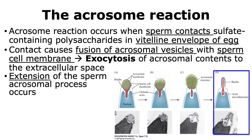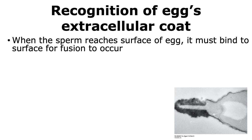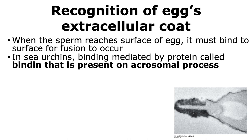Once this release occurs, there is an extension of the sperm acrosomal process. The enzymes that are released can digest a path through the jelly coat to the egg cell surface. After the acrosomal reaction, the next step is the recognition of the egg's extracellular coat. When the sperm reaches the surface of the egg after penetrating through the vitilin envelope, it must bind to the surface of the egg for fusion to occur. In sea urchins, this binding is mediated by a protein present on the sperm called bindin, normally present on the acrosomal process as shown in the figure, indicated by dark coloration around the finger-like acrosomal process.